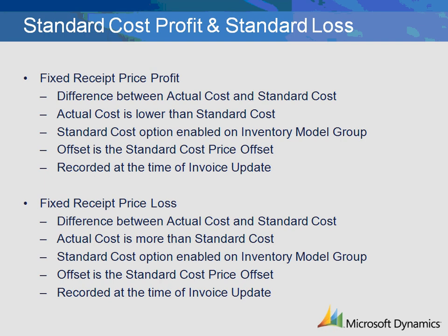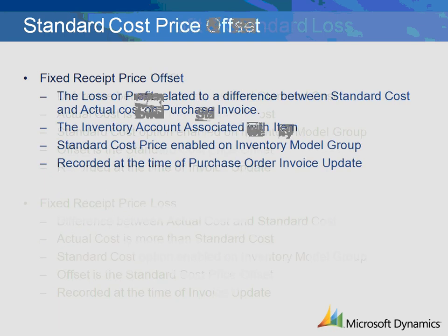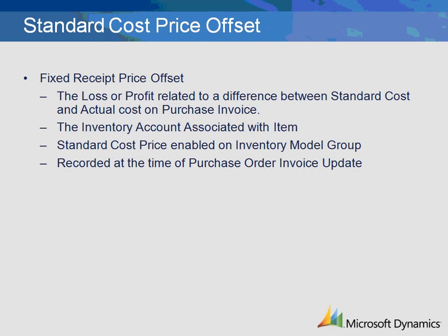The fixed receipt price loss transaction is the setup related to the recording of the price difference between the standard cost of an item and the purchase price recorded at the time of purchase invoice update, where the purchase price is greater than the standard cost of the item. The ledger account is a profit and loss type account that will be debited at the time of the purchase order invoice update. This transaction will only occur if you are using standard costing as defined in the inventory model group associated with the item. The fixed receipt price offset transaction is the setup related to the recording of the offset to the standard cost profit and/or standard loss transactions. The ledger account is the inventory account associated with the item being purchased. The transaction will only occur if you are using standard costing as defined in the inventory model group, and is created at the time of purchase order invoice update.